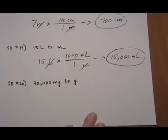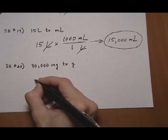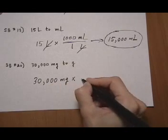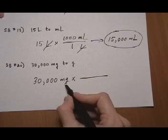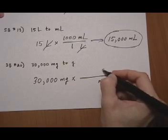And the last one, skill builder number 20: we have 30,000 milligrams and we're going to multiply by one again. The unit fraction to build the one this time will need milligram on the bottom because we want it to cancel out, and gram on top because that's what we want left over.